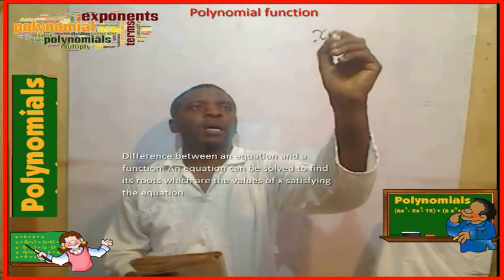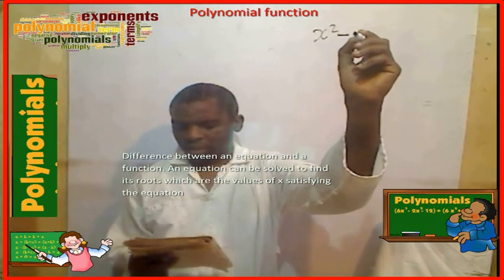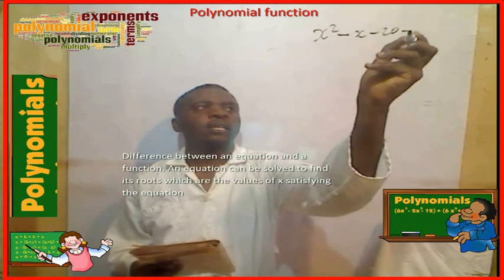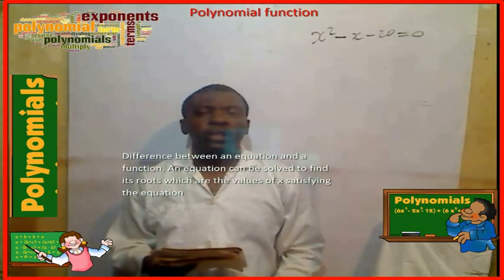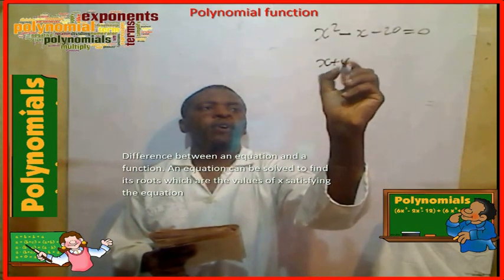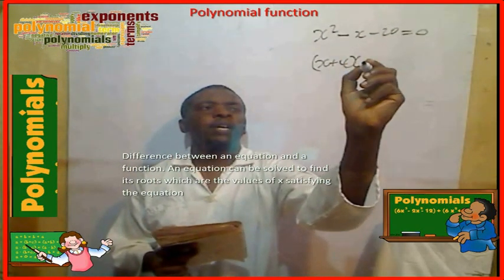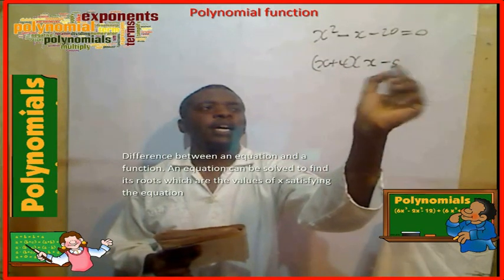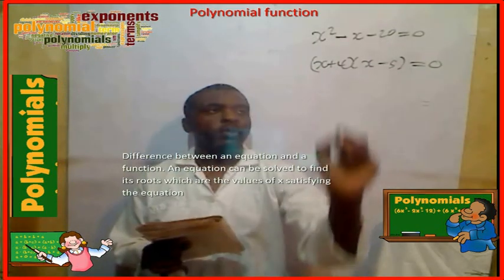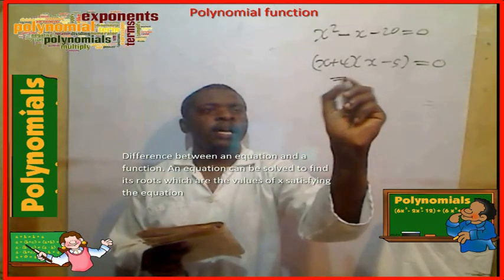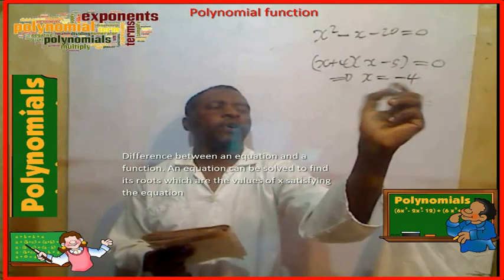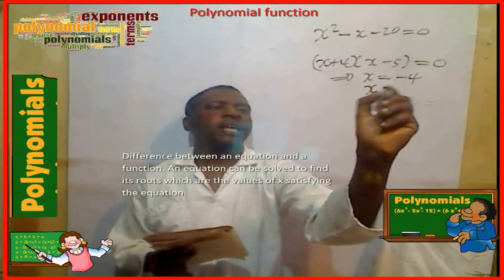Example: x squared minus x minus 20 is equal to 0. The roots of this equation are found by factoring: (x + 4)(x − 5) equals 0.